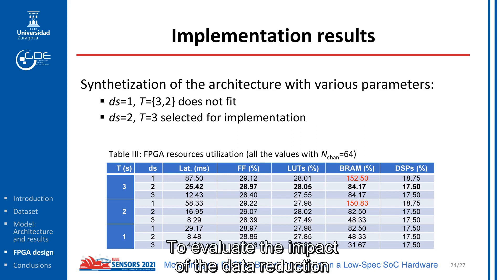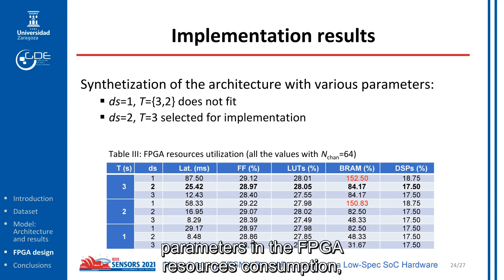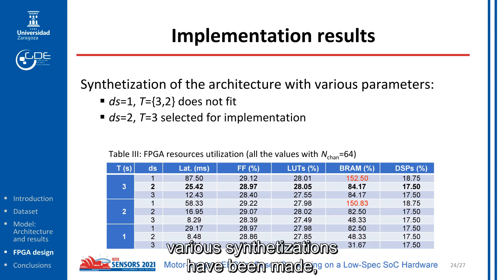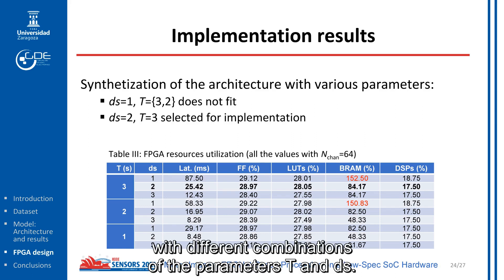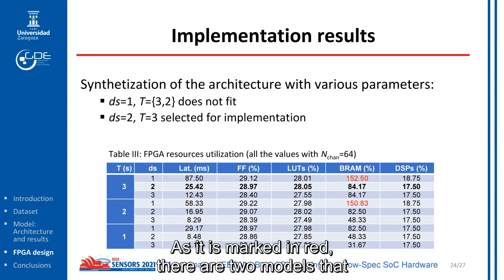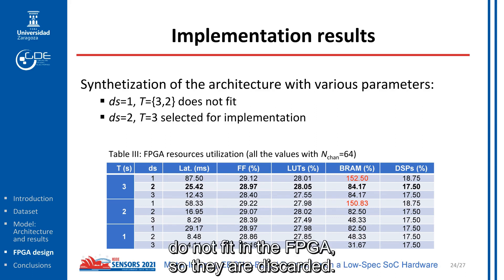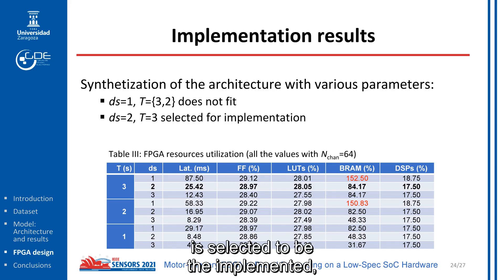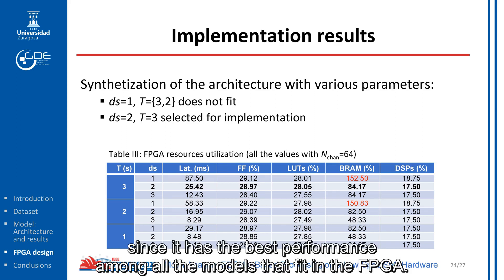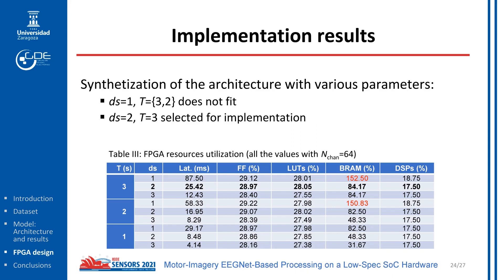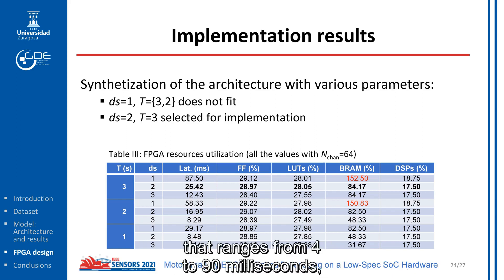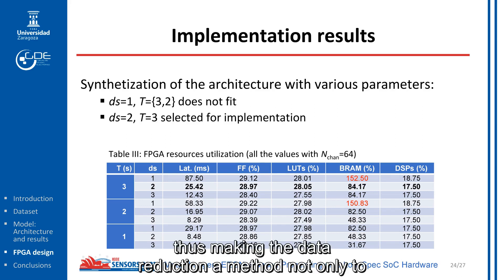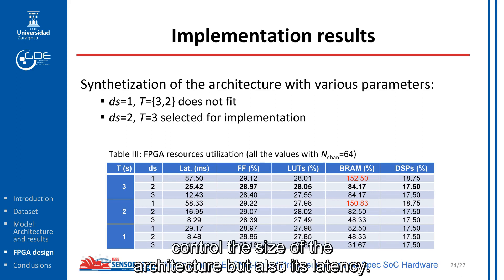To evaluate the impact of the data reduction parameters in the FPGA resource consumption, various implementation processes have been made with different combinations of parameters T and DS. As marked in red, there are two models that do not fit in the FPGA, so they are discarded. With these results, the architecture with a time window of 3 seconds and a downsampling factor of 2 is selected to be implemented, as it has the best performance among all the models that fit in the FPGA. Another point to remark is the latency of the system, ranging from 4 to 90 milliseconds, thus making data reduction a method to control not only the size of the architecture but also its latency.